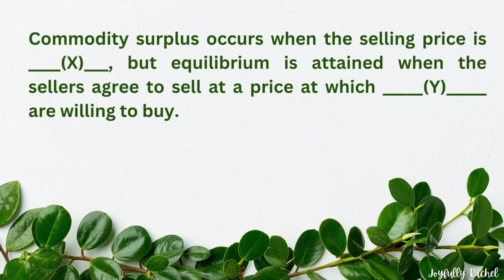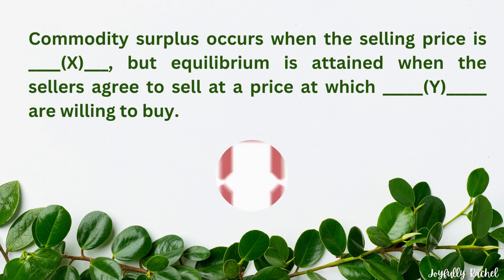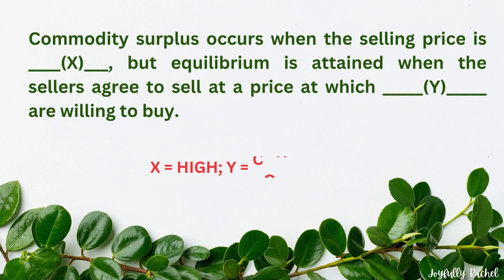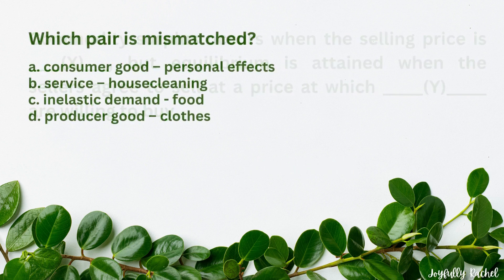Commodity surplus occurs when the selling price is X (high). But equilibrium is attained when the sellers agree to sell at a price at which Y (consumers) are willing to buy.